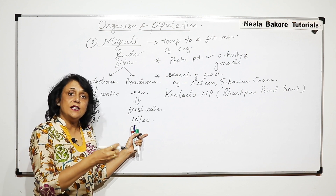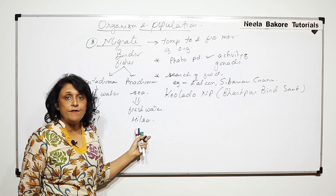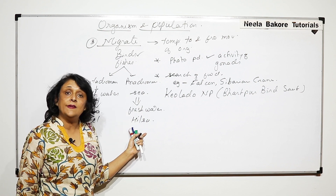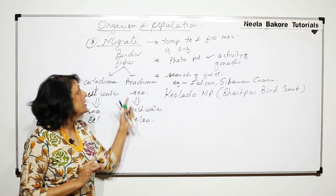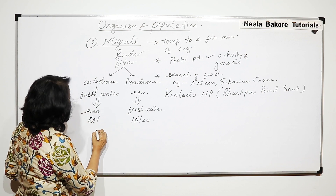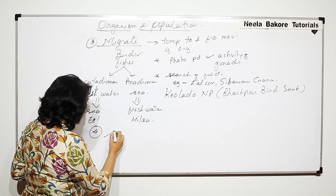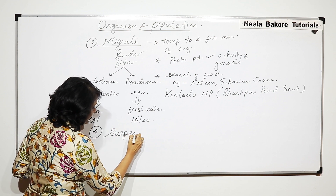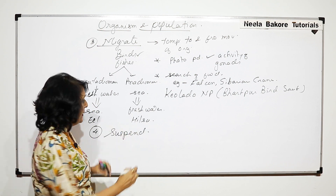By changing the place where these animals live, they are able to cope with changed abiotic conditions — they can show migration. The fourth response is known as suspend. In suspend we will talk about three things.